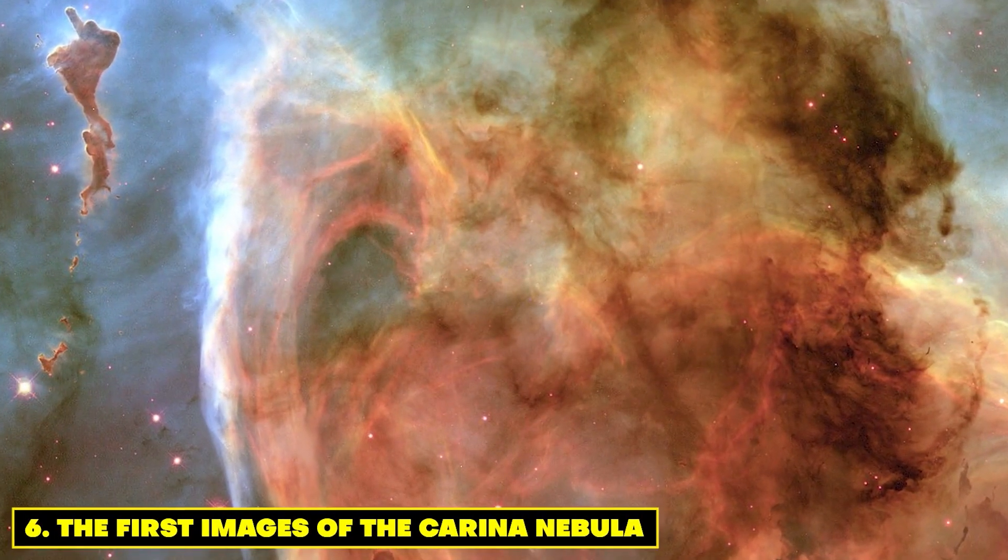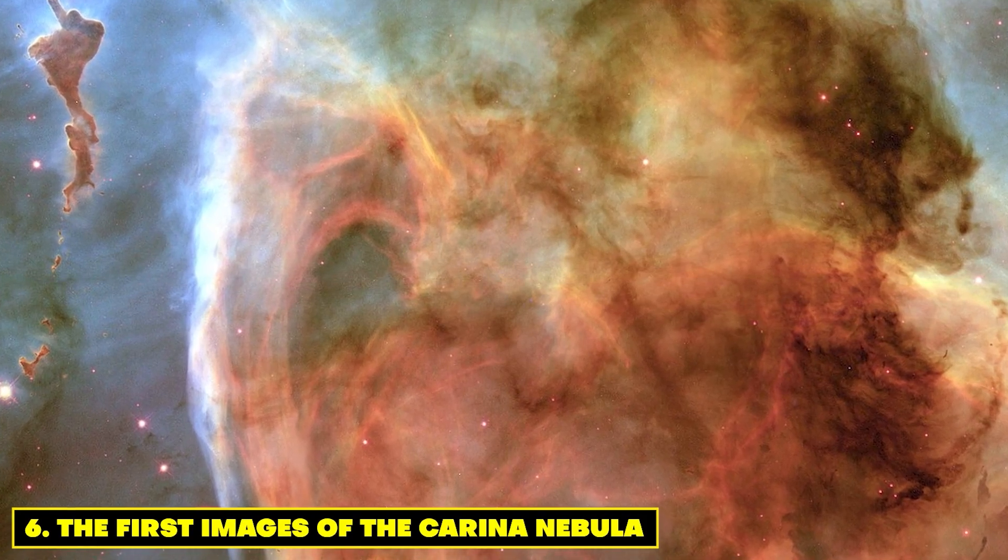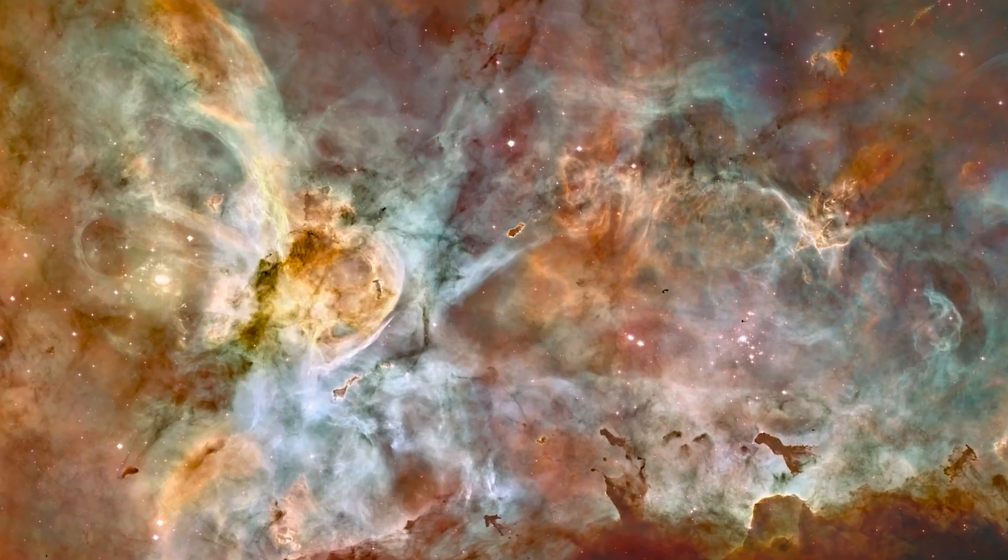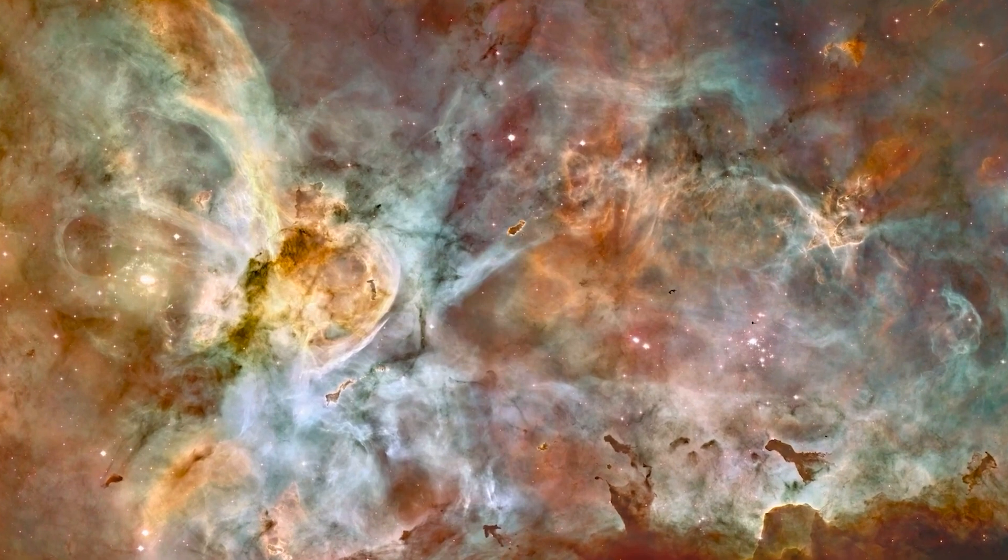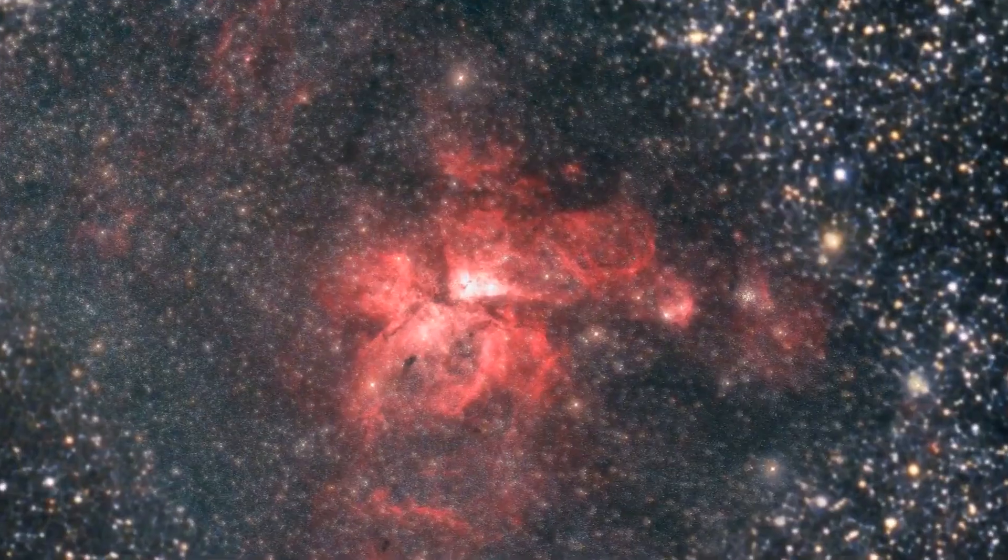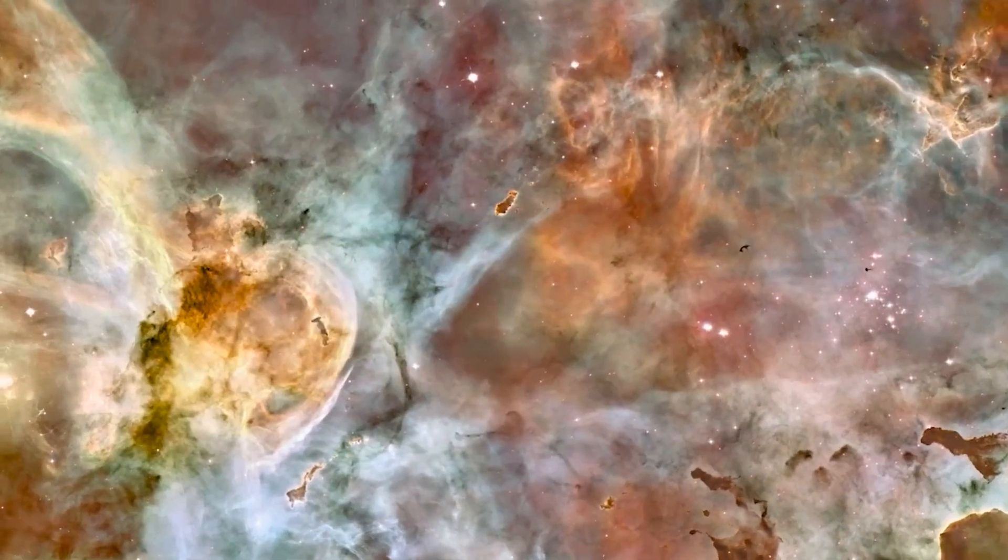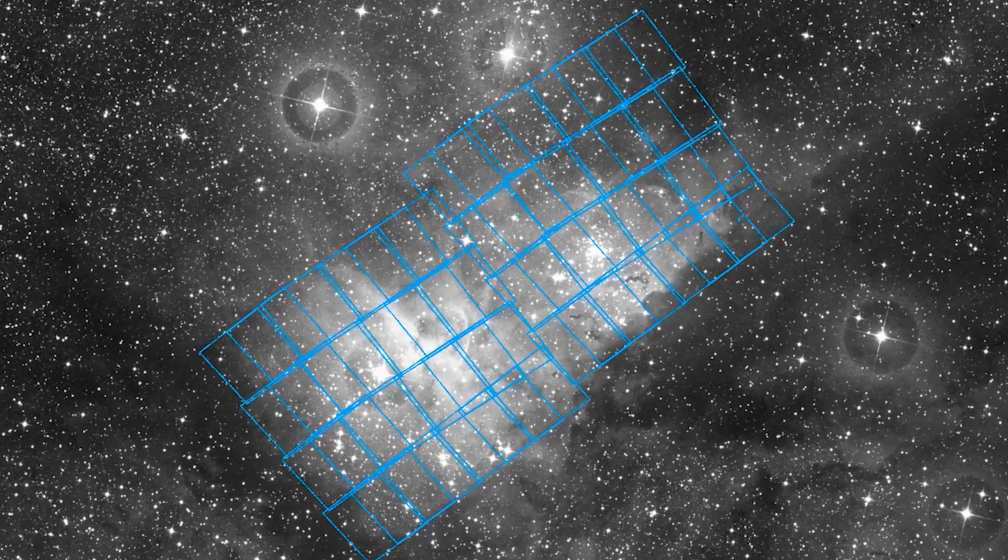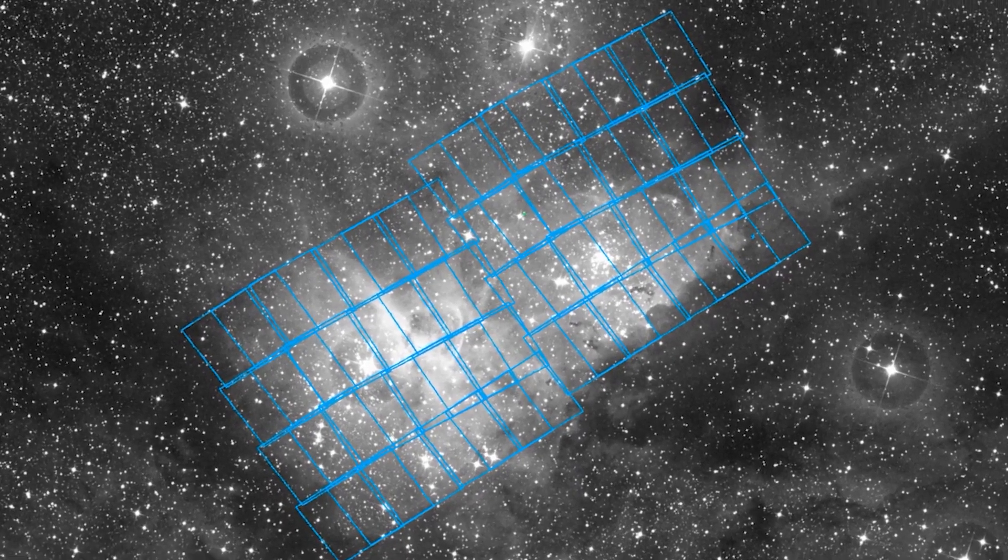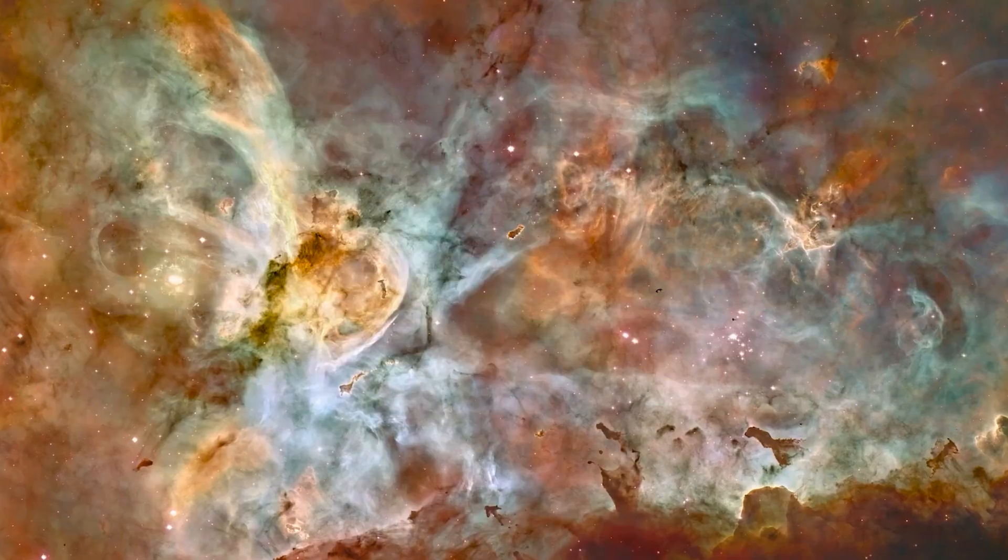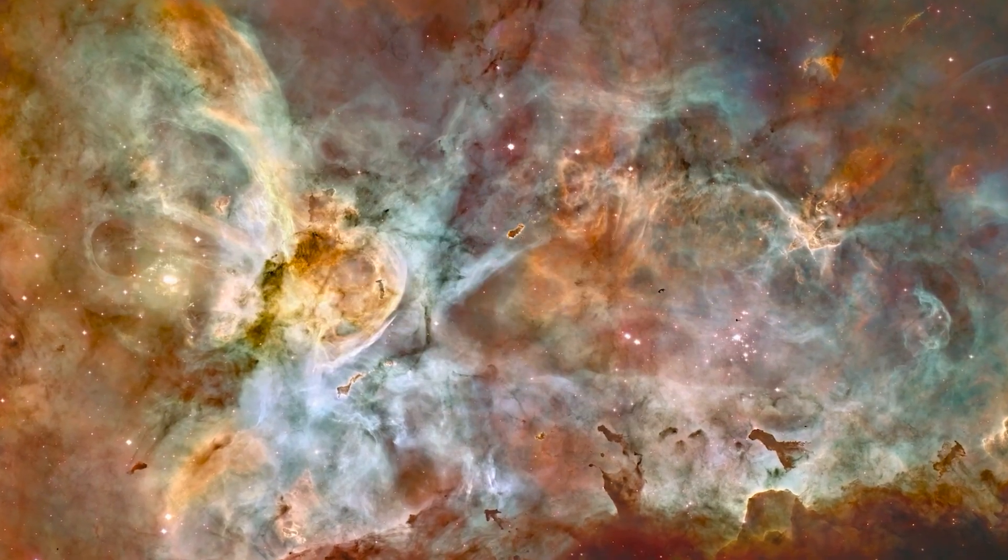Number 6. The First Images of the Carina Nebula. The James Webb Space Telescope extends an invitation to behold the resplendent beauty of the Carina Nebula, a stellar nursery nestled a staggering 7,600 light-years away from our home planet. Within these celestial vistas, we are treated to the towering pillars of gas and dust, the very cradles of newborn stars.